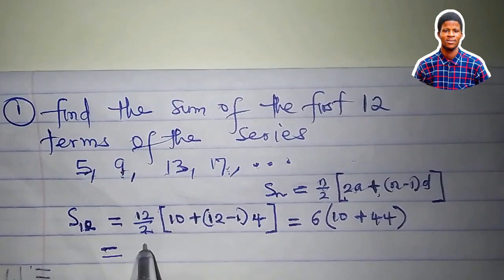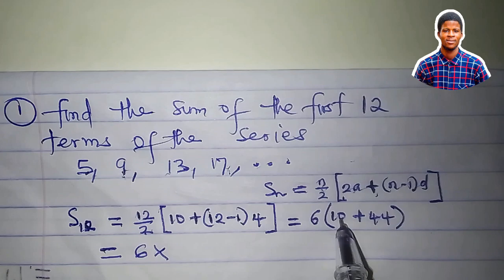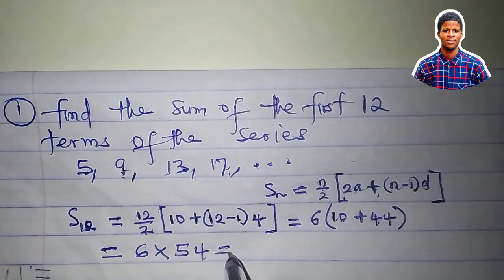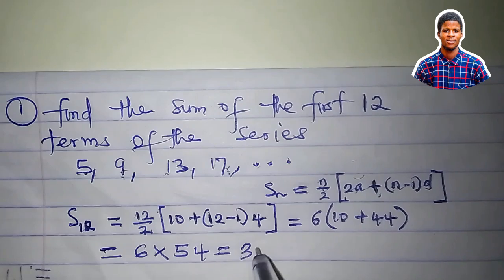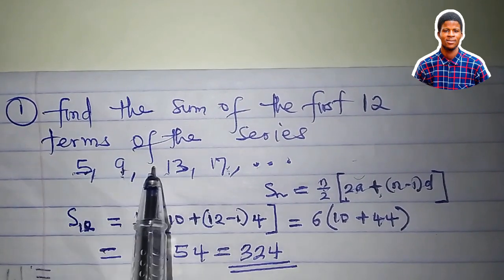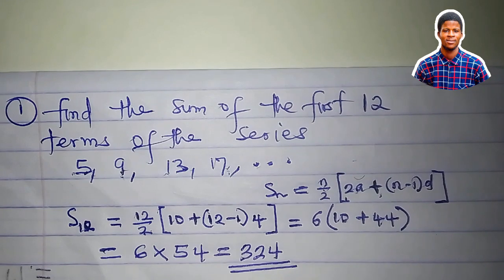So we have 6 times, 10 plus 44 is 54, and this equals 324. The sum of the first 12 terms of this progression is 324.